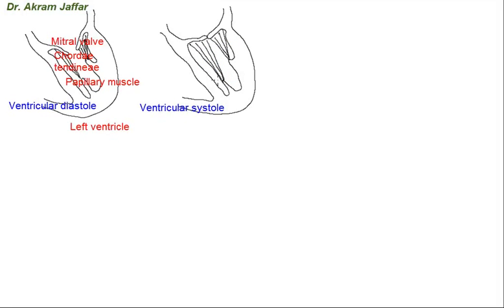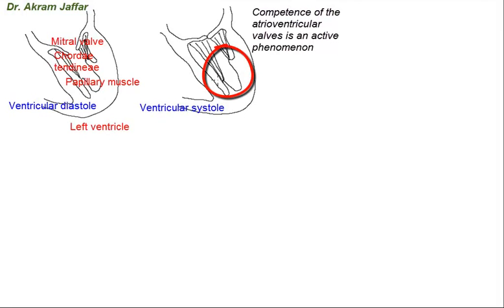Thus, the chordae tendineae prevent eversion of the cusps into the right or left atrium as ventricular pressure rises. This means that the competence of the atrioventricular valves — whether the mitral valve or the tricuspid valve — is an active process, because it requires contraction of the papillary muscles and tightening of the chordae tendineae to maintain the competence of these atrioventricular valves.